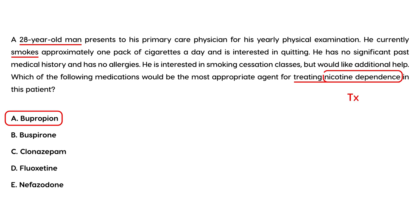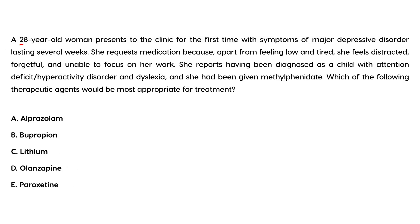This is a pretty straightforward question. Bupropion was approved for the treatment of nicotine dependence. It's thought to reduce the craving for nicotine as well as reducing the withdrawal symptoms — that's how it works.